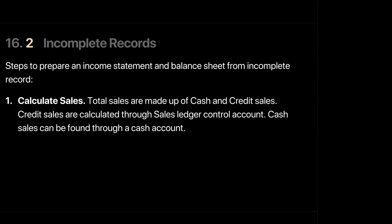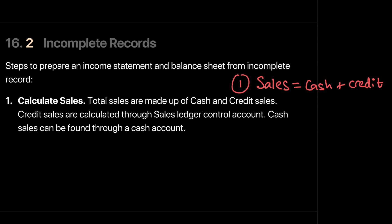Let's start with the workings for incomplete records step by step. Step one is to calculate our sales. Total sales for a business is made up of cash sales and credit sales. So the first thing we need to calculate is our sales, which is made up of cash sales and credit sales.